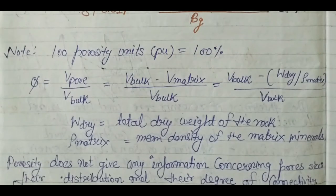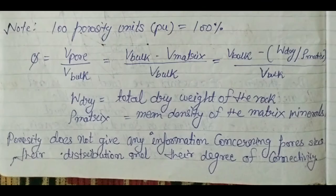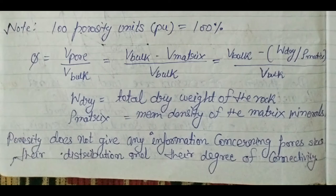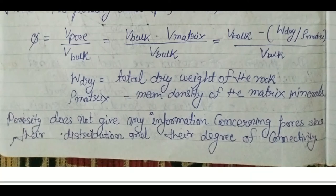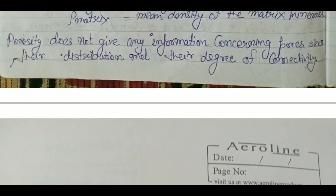Porosity is also represented by porosity units; 100 porosity units means 100 percent. Phi equals V-pore upon V-bulk, and V-pore can be written as V-bulk minus V-matrix, where volume of matrix equals weight of dry sample divided by density of the matrix. Again, porosity does not give any information about pore sizes, their distribution, or their degree of connectivity.